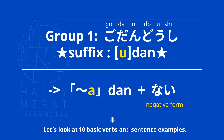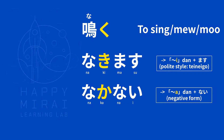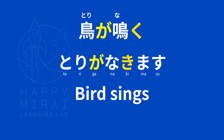Let's quickly go through the 10 basic verbs and sentence examples. First verb: 鳴く (naku) — to sing, to meow, to moo. 鳴きます (nakimasu). 鳴かない (nakanai). Example: 鳥が鳴く (tori ga naku) — 鳥が鳴きます (tori ga nakimasu). Bird sings.